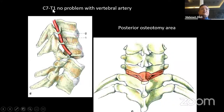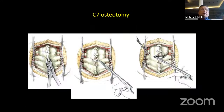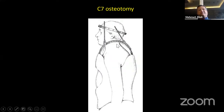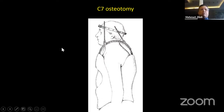Why C7 and T1? Because there is no vertebral artery there, making it easier for posterior osteotomy — kinking of the artery is not an issue. However, at C6 or upper levels, kinking of the artery may happen. At the end, a halo device with a body cast is applied, and the patient stays in this device for six months — so there are no implants.